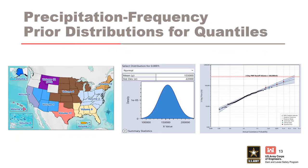You should now have an understanding of regional precipitation frequency analysis, an understanding of prior distributions for quantiles, and know how to use precipitation frequency information to inform quantile prior distributions in RMC Best Fit.